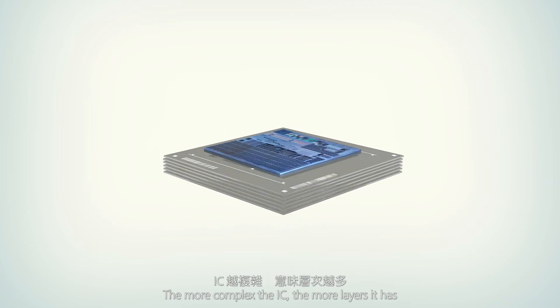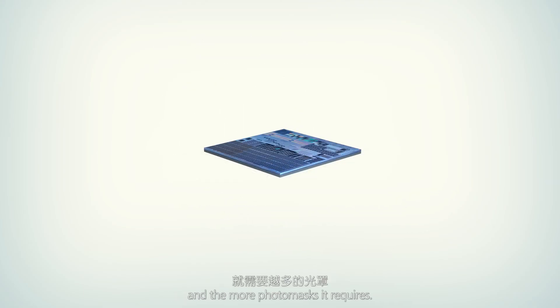A single photomask represents a layer of circuits. Some complex ICs require multiple photomask layers to complete a circuit's design. The more complex the IC, the more layers it has, and the more photomasks it requires.